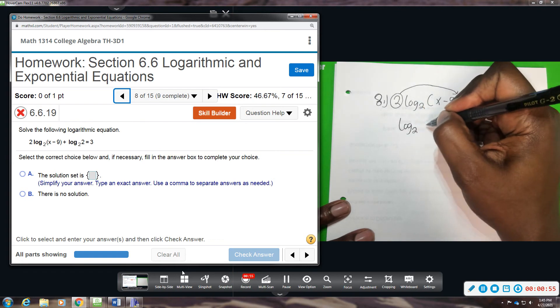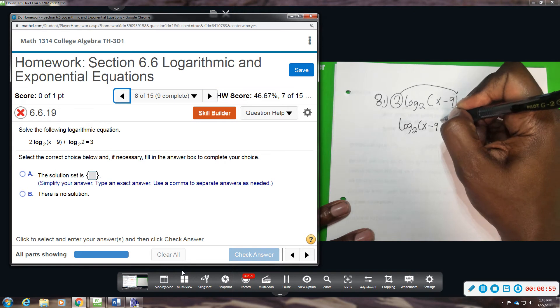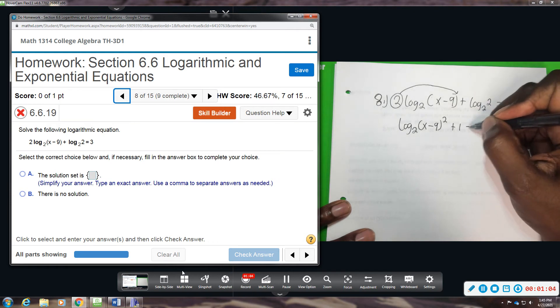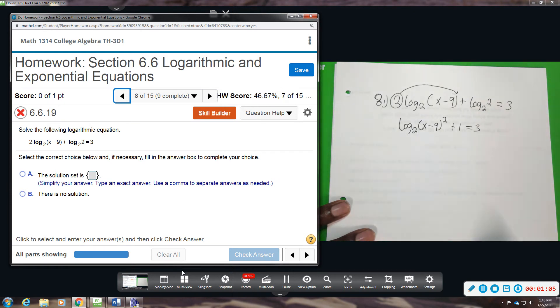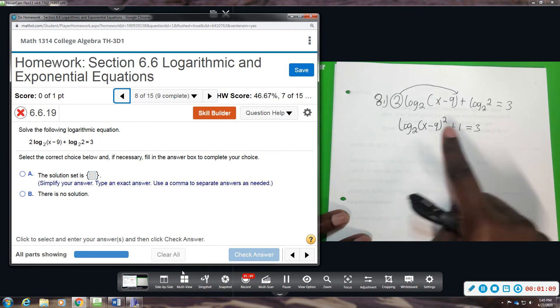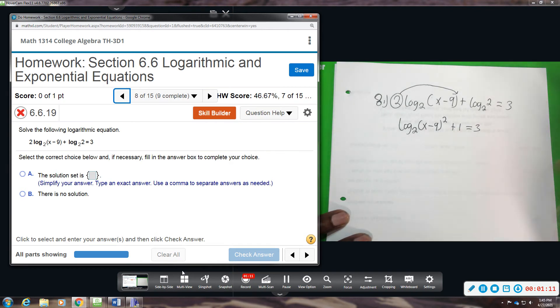Log base 2 of x minus 9 is now squared plus 1 equals 3. All right, so we're going to start solving to try to isolate this log, get it by itself. We're going to subtract 1 from both sides.